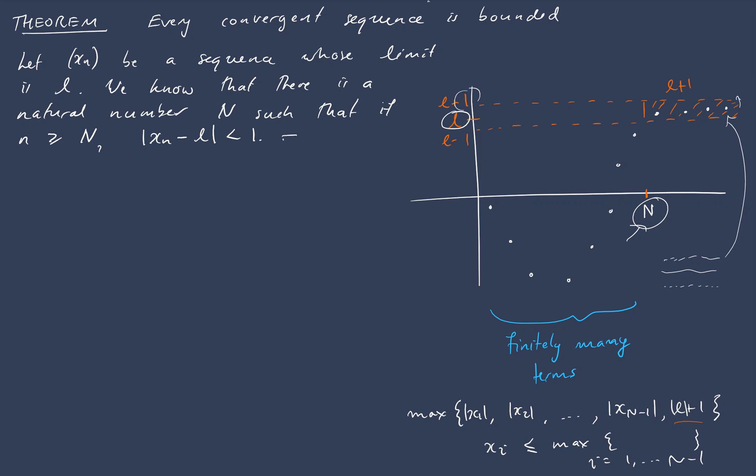This implies that the absolute value of Xn is less than L plus 1. Okay, that's fairly easy to demonstrate from the previous one, so I'm not going to expand that out into any detail.